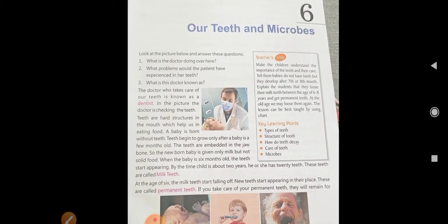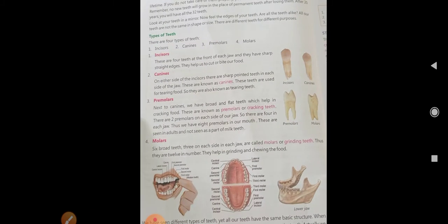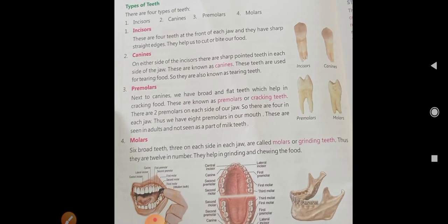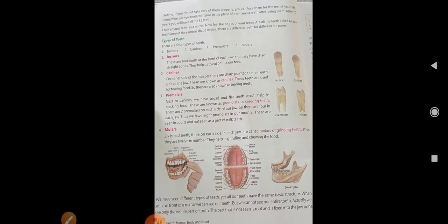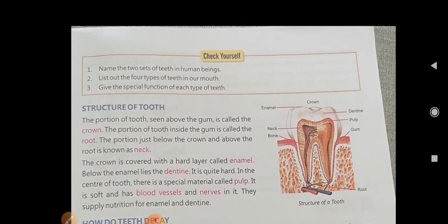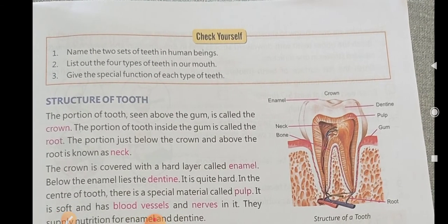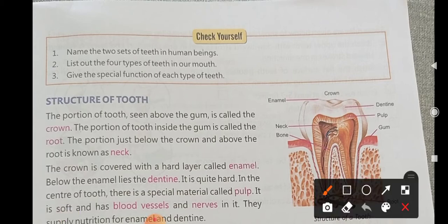We have already talked about milk teeth, permanent teeth, and the types of teeth in the previous lecture. Today's topic is the structure of a tooth — what the structure looks like. You can see it here on screen.